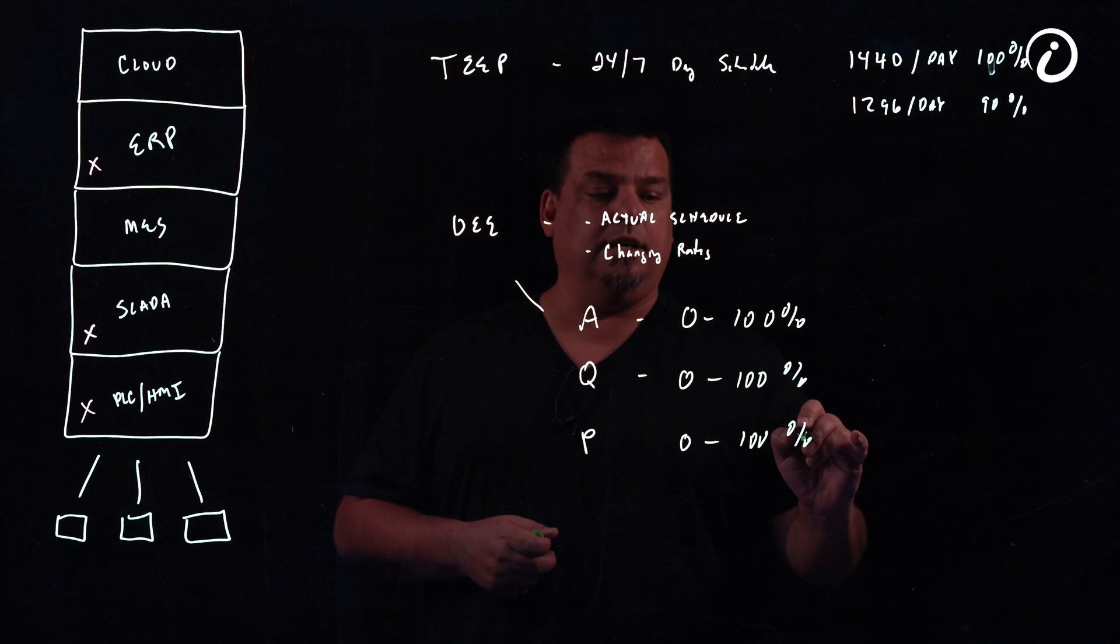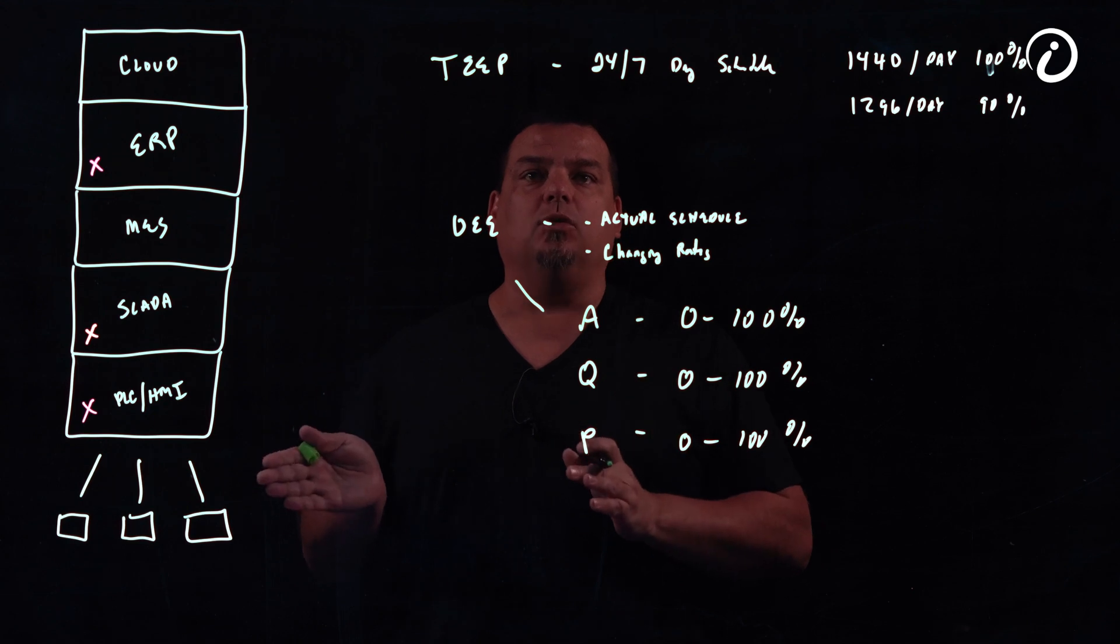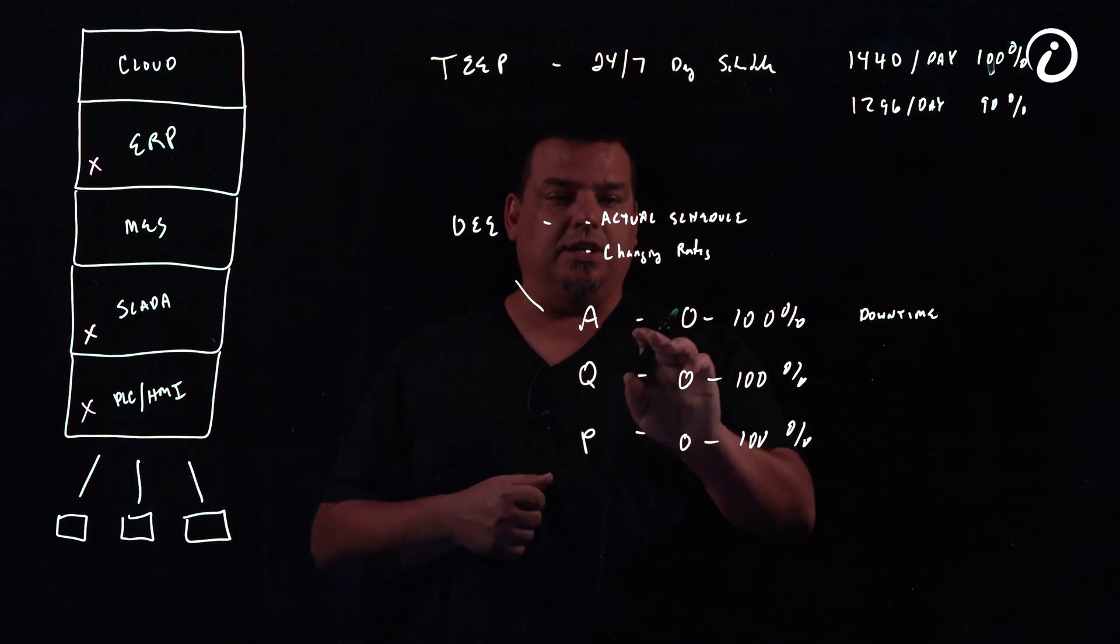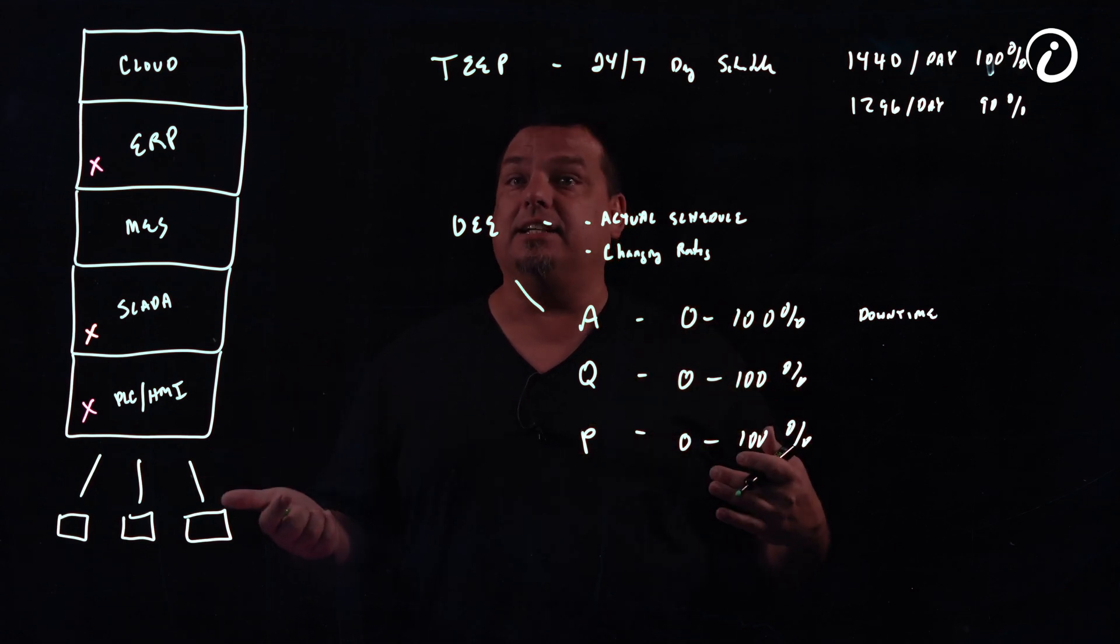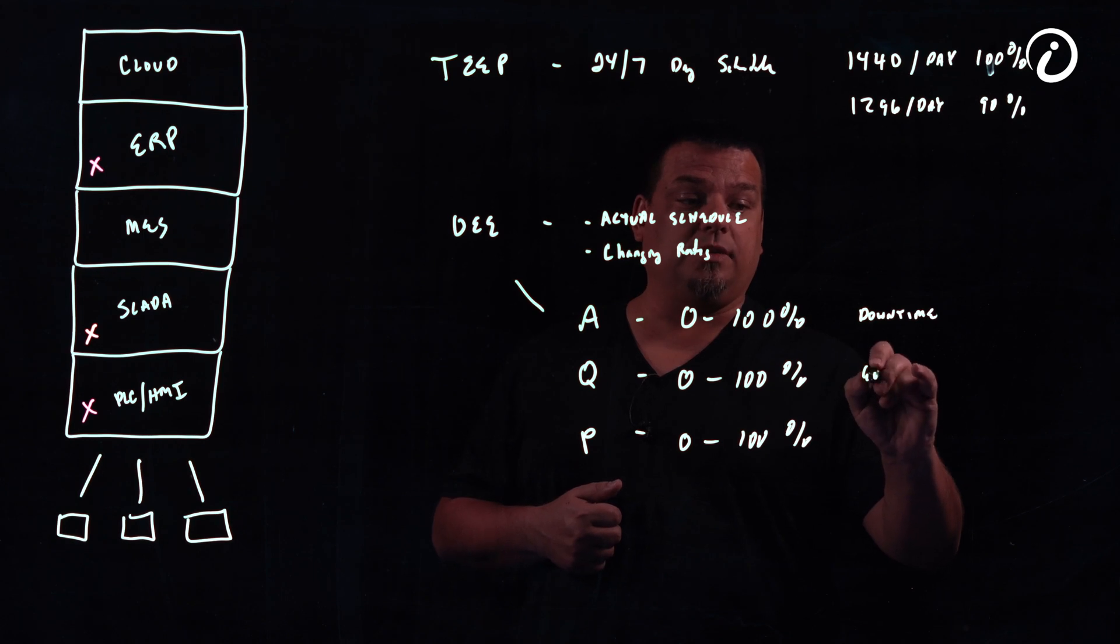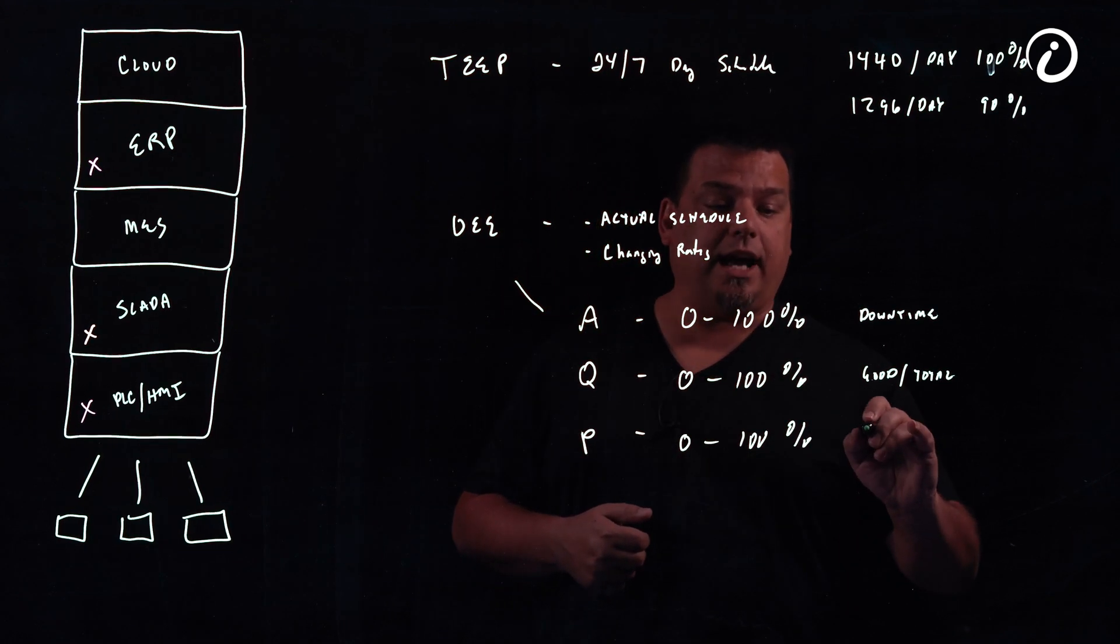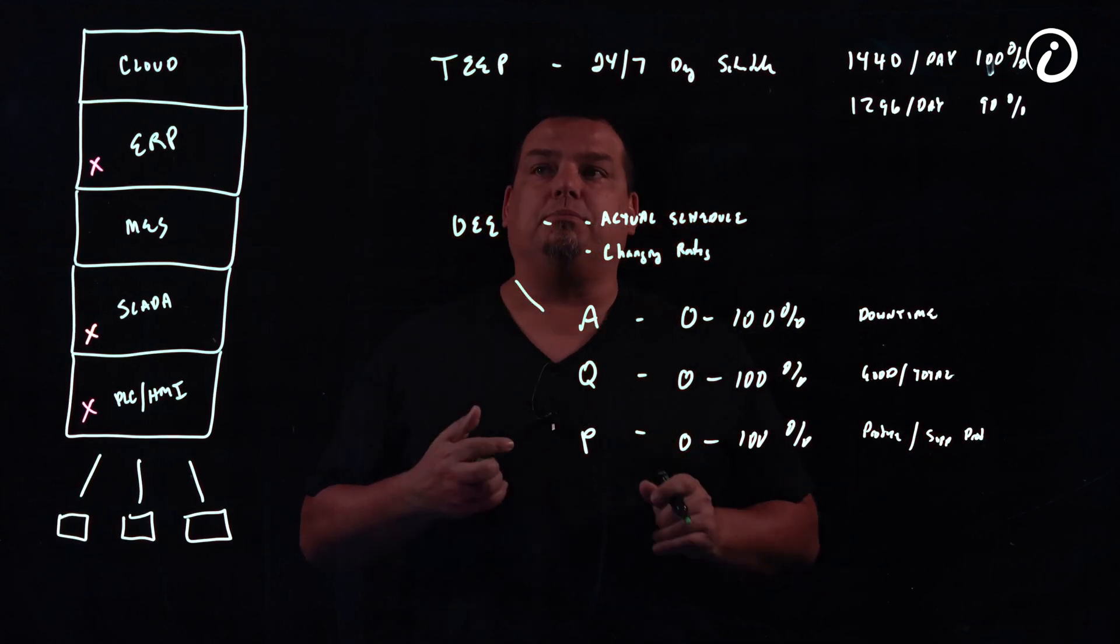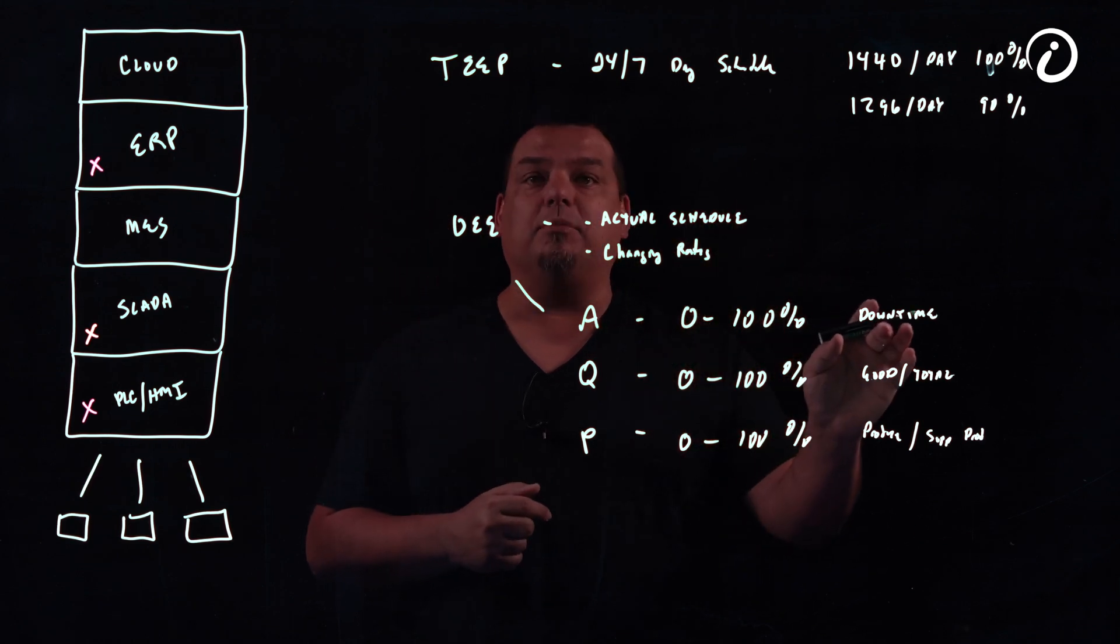Very simple: availability is what percentage of the time that the machine was scheduled was it available to run. This takes into account downtime—when the machine broke, when the machine was down. This number will tell us what percentage of the time when I was supposed to be running was I down because of some maintenance issue. Quality is very simple: it's the number of good parts divided by the number of total parts—how much waste did I produce. And performance is what did I produce relative to what I was supposed to produce. Performance only takes into account production when the machine was available.